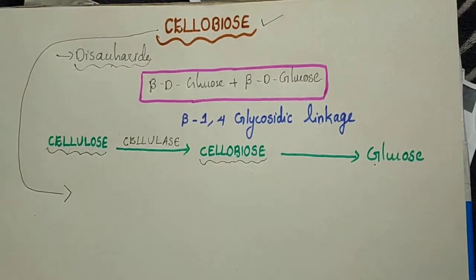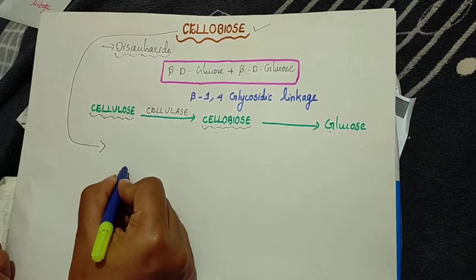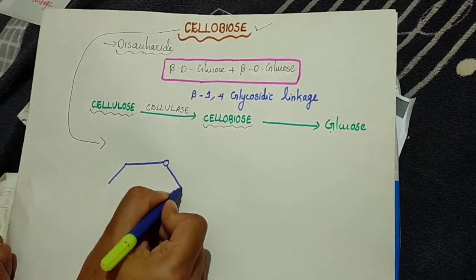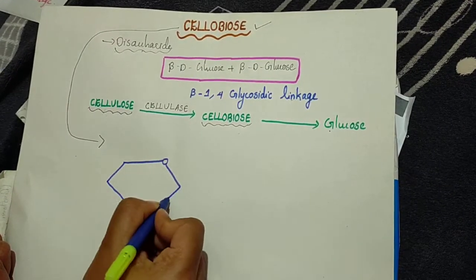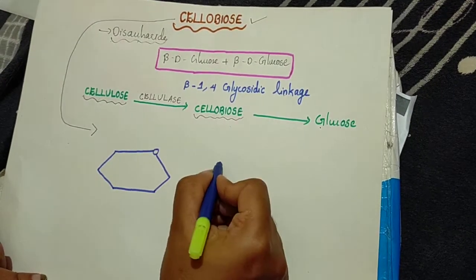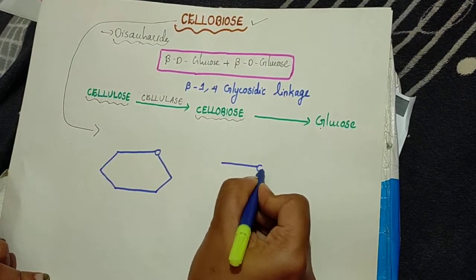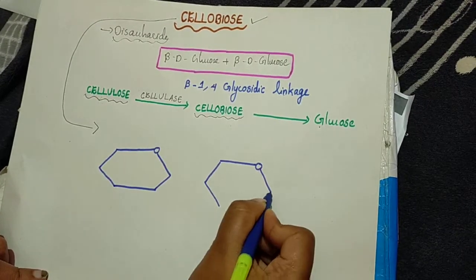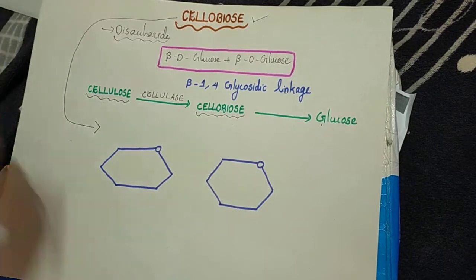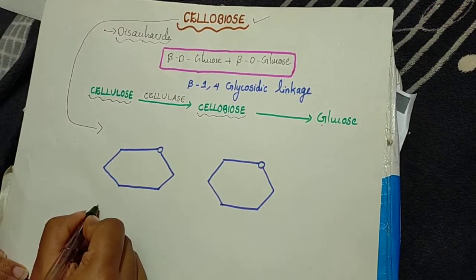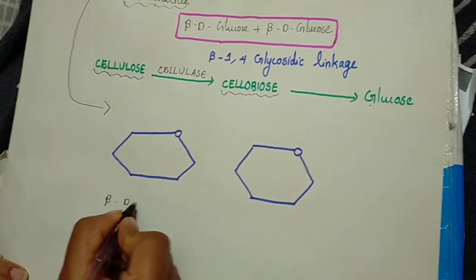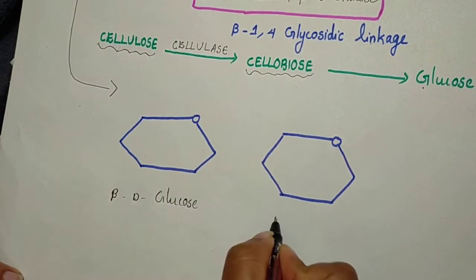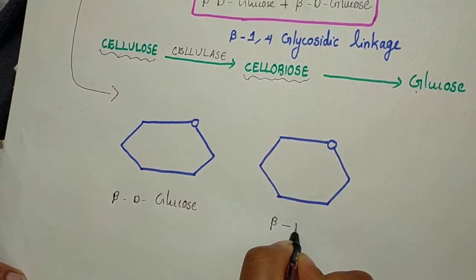First of all, draw the outline of two pyranose rings. One pyranose ring structure is for one beta-D-glucose, and the second one is for the other beta-D-glucose.